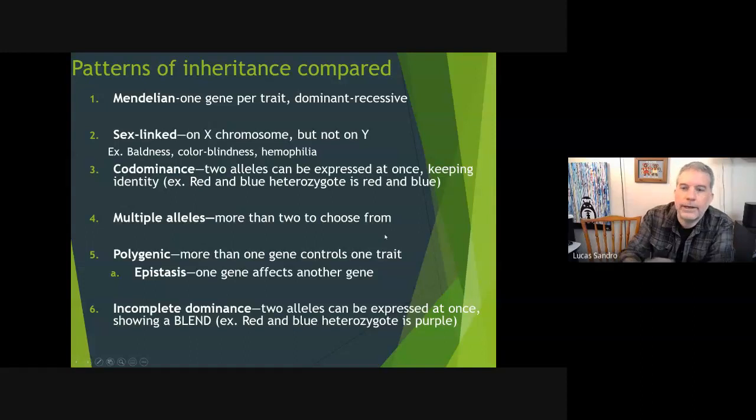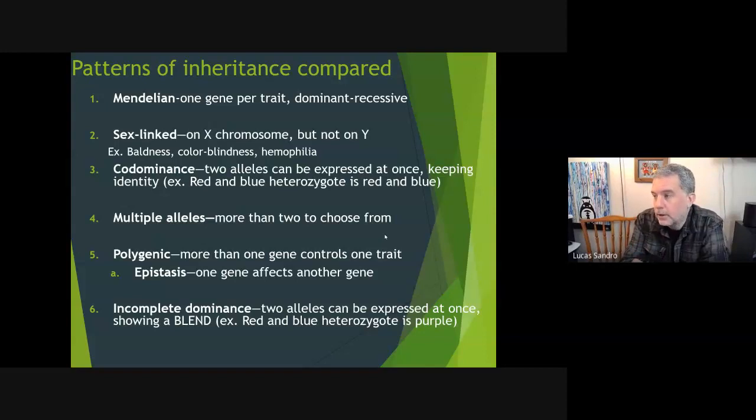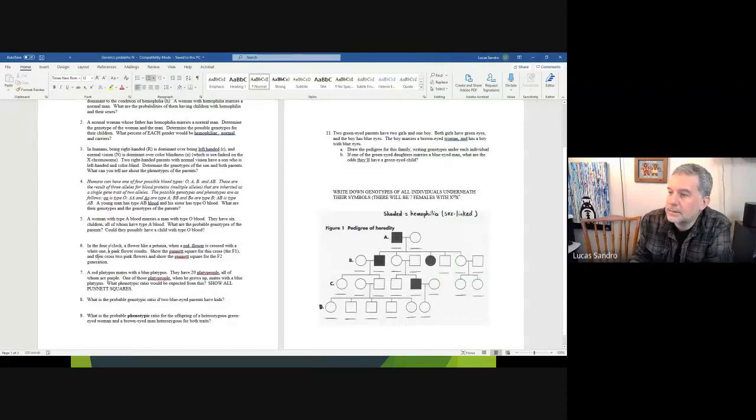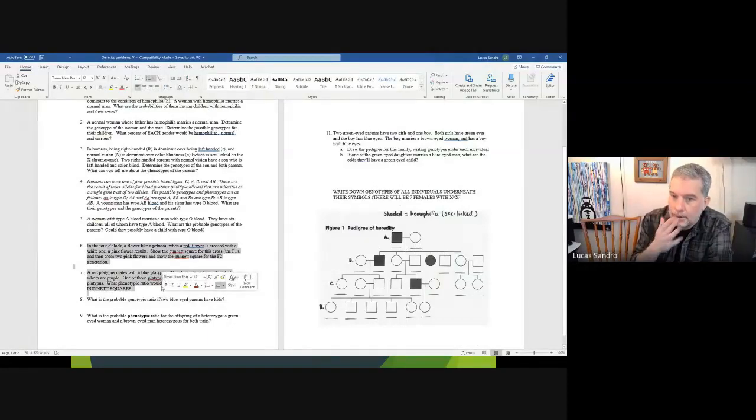All right, so not too much today. Your homework: what I'd like you to have done for Monday, beyond the Chapter 14 guided reading and the other stuff that you got yesterday - what I'd like you to have done for Monday is the last two problems on the genetics problems four, which are the ones we didn't do: six and seven. Those are both using what we learned today. Okay, I think that's all we have to talk about. Send emails if you have questions. I hope you have a good day and a good weekend. See ya!